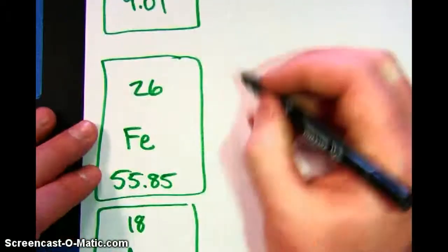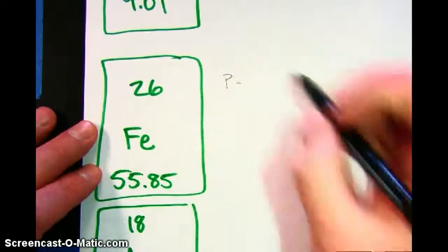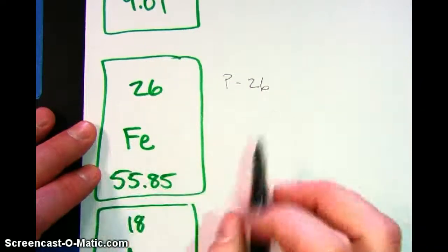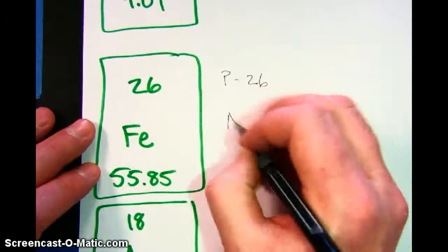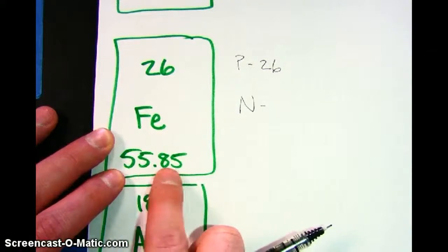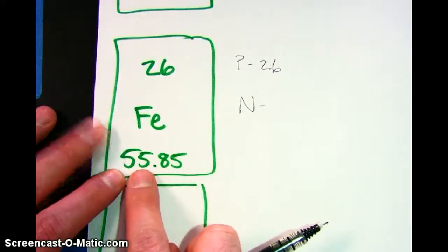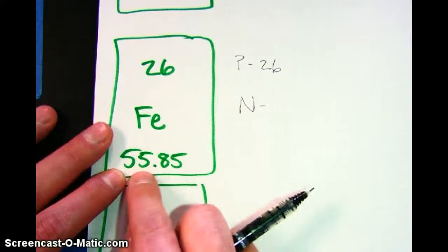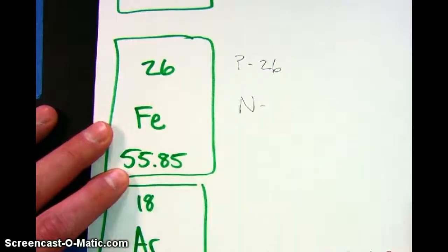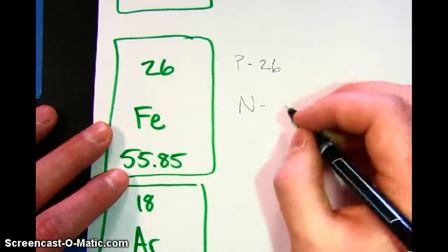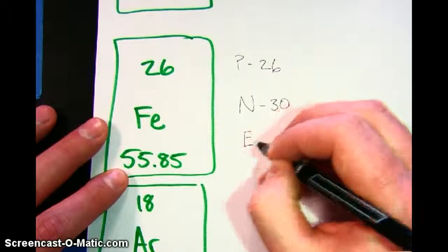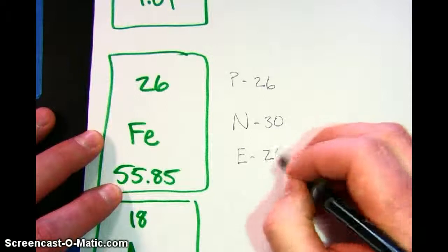We look at iron. In this example, the atomic number is 26, so it's got 26 protons. All iron atoms have 26 protons. For neutrons, this time we have 55.85. That rounds up to 56. So if we know that the nucleus has 56 particles in it, protons and neutrons, 26 of these are already from protons. That means that 30 of them have to be from neutrons. And again, the electrons are the same as the protons, 26.